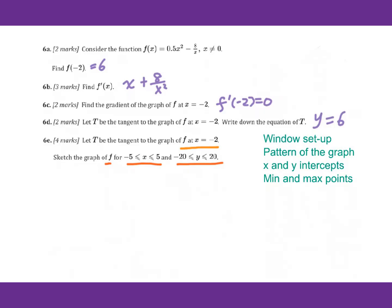When you are asked to sketch the graph, here are the four marks. One mark goes to window setup — you have to set up the given window. Then the pattern of the graph is one point. Then x and y intercept will be one point. Minimum and maximum points on the graph is another point. That's how you get those four marks.